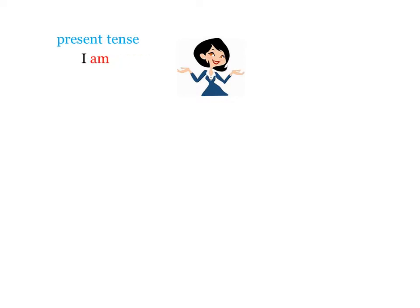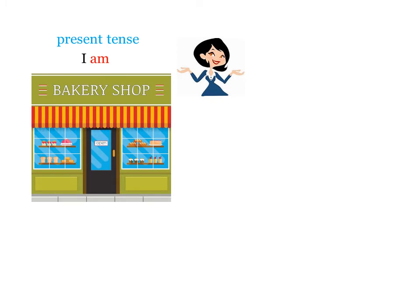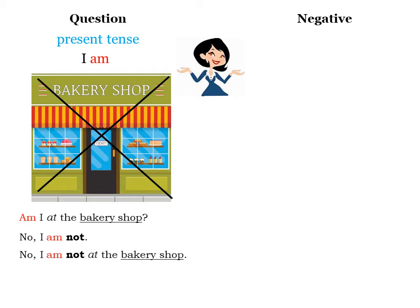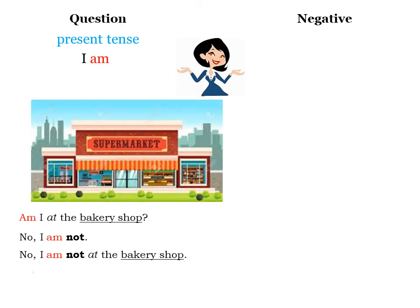Present tense: I am. Question: Am I at the bakery shop? Negative short answer: No, I am not. And the sentence: No, I am not at the bakery shop.